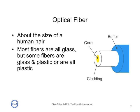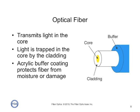The optical fibers we use for communications are about the size of a human hair. Most fibers are made completely of glass, molded as a single structure incorporating a core and a cladding. But some fibers are also made out of glass and plastic, or even all plastic. The fiber transmits light in the core, and the light is trapped in the core by the cladding using an optical technique known as total internal reflection. On the outside of the glass fiber, we put an acrylic plastic buffer coating to protect the fiber from moisture or damage.